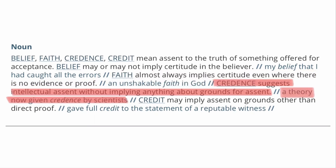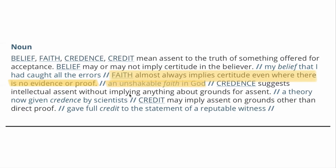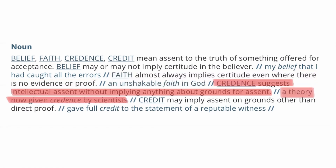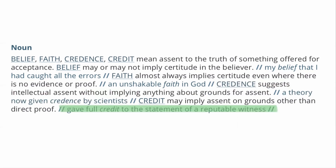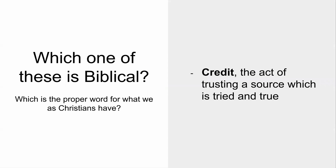Credence suggests intellectual assent without implying anything about the grounds for assent. Notice the contrast: 'unshakable faith in God' is the example used with no evidence or proof, while credence gets 'a theory now given credence by scientists.' You can get a clear impression of what the writers thought. Then there's credit, which may simply mean assent on grounds other than direct proof — 'they gave full credit to the statement of a reputable witness.'